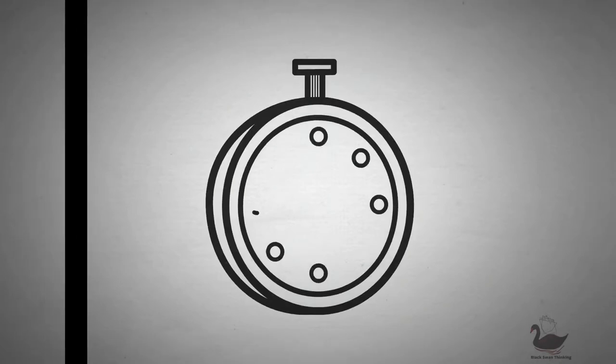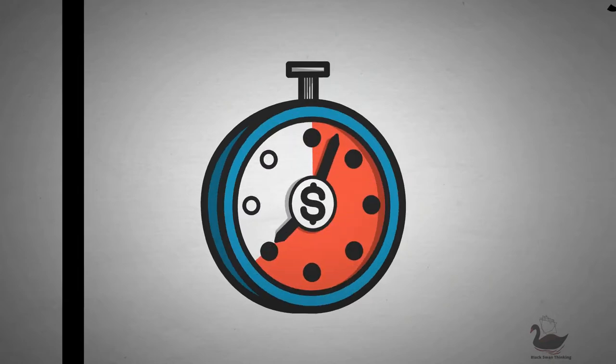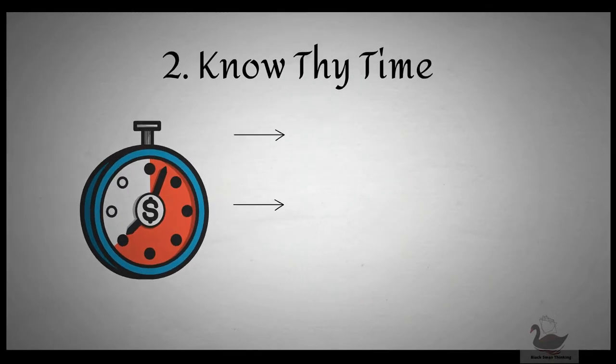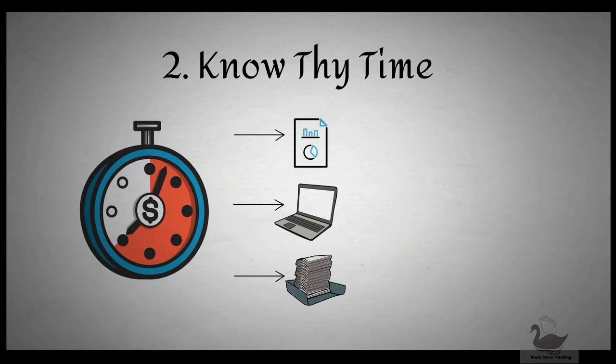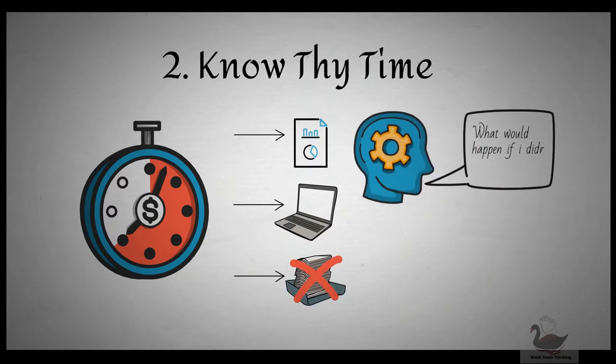Effective executives don't start by measuring what they need to do. First, they measure their time and find out where most of it is spent. Thereafter, they eliminate the activities that put unproductive demands on their time. They ask themselves, what would happen if I didn't do this task at all? Or if someone else did it instead of me? If the outcome is acceptable, they will either stop doing that activity or delegate it to someone else.